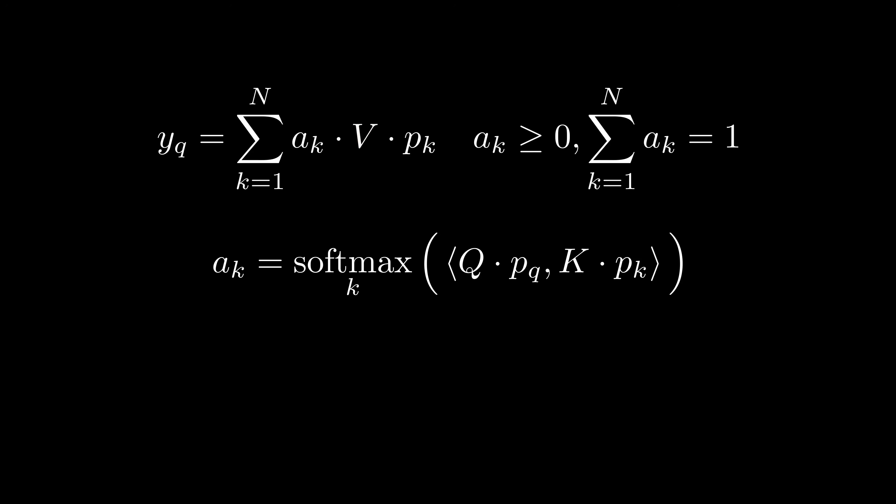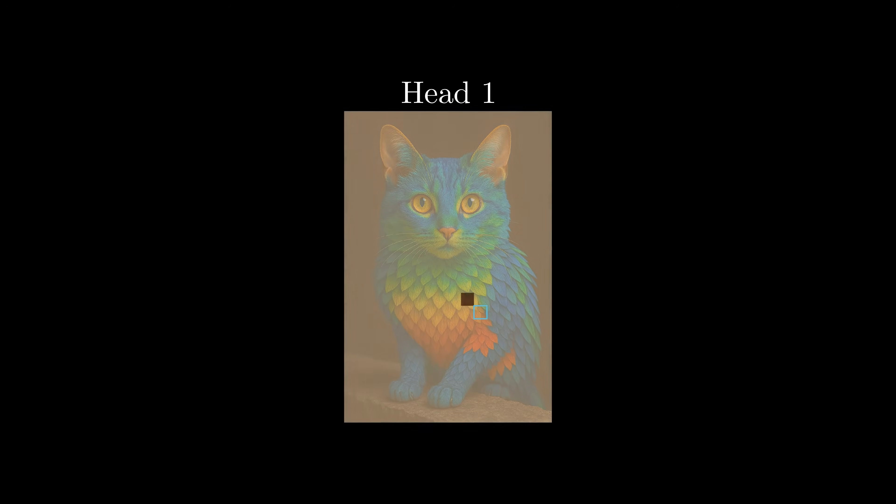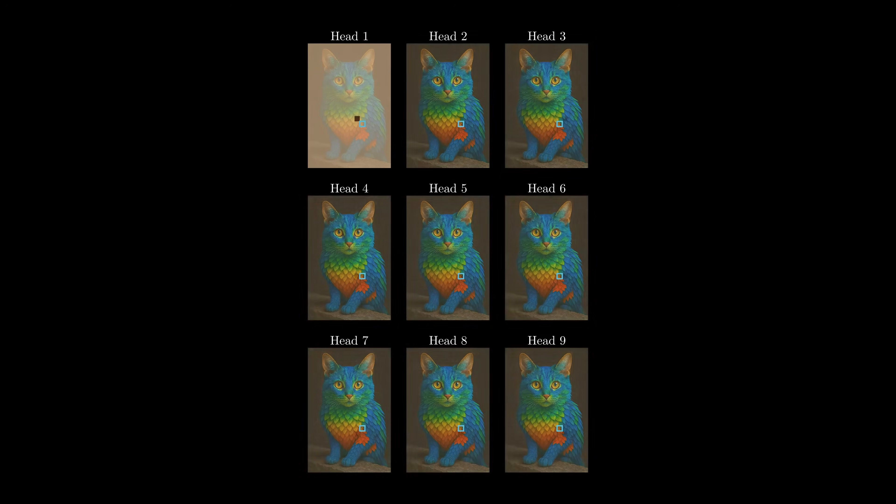Our goal is to make the attention scores only dependent on this relative position, just like a convolutional kernel does. It turns out there exists a particular choice of Q and K that cancels out all image-dependent terms in the dot product and keeps only the relative position term. What's left is a one-hot pattern. Each head attends only to one relative position consistently across all images. I'm omitting the proof here, but you can find it in the paper. The single leap of faith that you need to make here is that such a choice of Q and K exists. Now, since one head can only attend to a single pixel, we need nine of them to implement a 3x3 convolutional kernel.